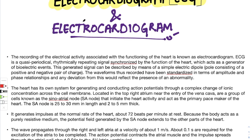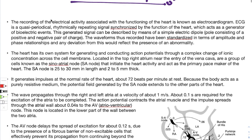Hello everyone, today we will be talking about ECG, that is the electrocardiogram and electrocardiograph. The electrocardiograph is the graph obtained from the signals generated in the heart, and the electrocardiogram is the device from which we measure these bioelectric events. The recording of electrical activity associated with the functioning of the heart is the electrocardiogram. ECG is a quasi-periodical, rhythmically repeating signal.